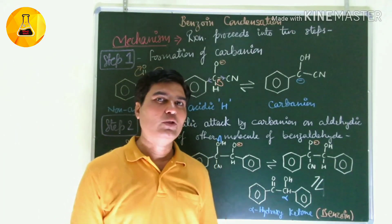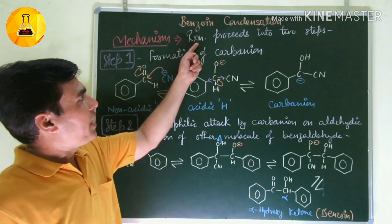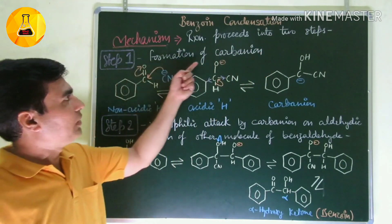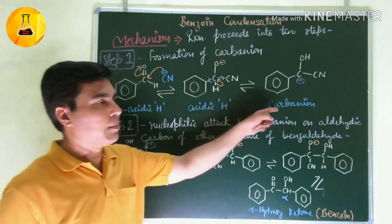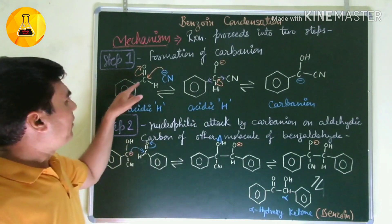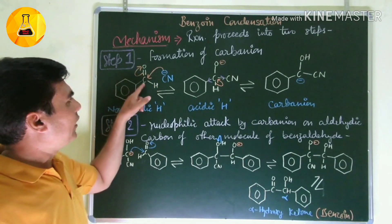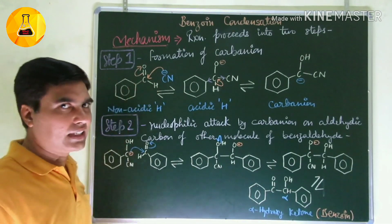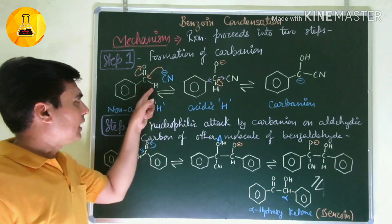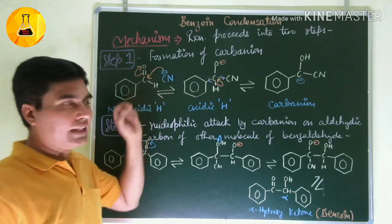The benzoin condensation reaction proceeds in two steps. The first step is the formation of a carbanion intermediate. Let's understand how this happens — KCN provides CN- which is a strong nucleophile.